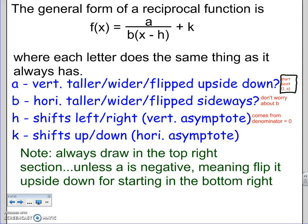h shifts it left and right, and it's also the vertical asymptote. Remember, that comes from our restriction. That comes from the denominator equal to zero. And k shifts up or down, and it's still our horizontal asymptote from before.